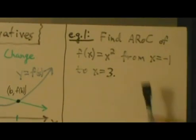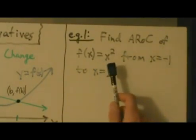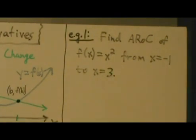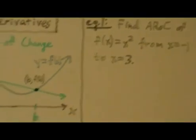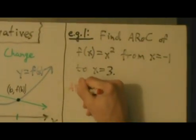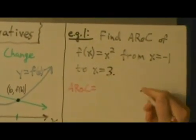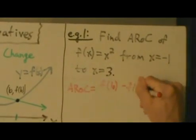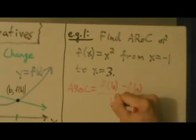Example one, find the average rate of change of f of x equals x squared from x equals negative 1 to x equals 3. So it's pretty much just a straightforward application of this definition here. So the average rate of change, AROC for short, equals f of b minus f of a divided by b minus a.